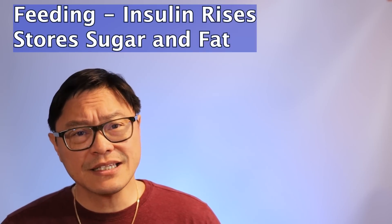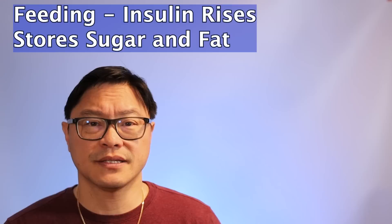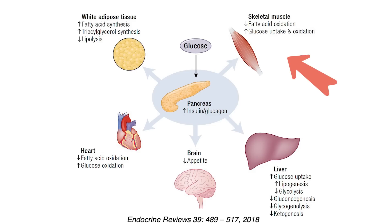During feeding, insulin tends to go up, and skeletal muscles, which is one of the major users of this glucose, stops producing glucose and starts storing the glucose. The fat cells stop burning fat and start making fat through the process of de novo lipogenesis.